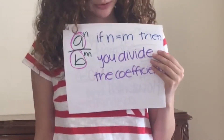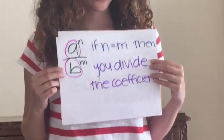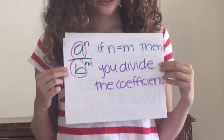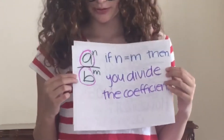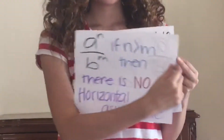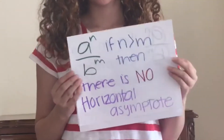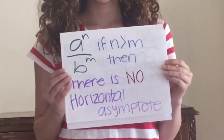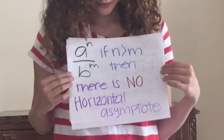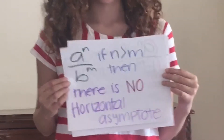If the degree of the numerator is equal to the degree of the denominator, then you divide the coefficients. And if the degree of the numerator is bigger than the degree of the denominator, then there is no horizontal asymptote.